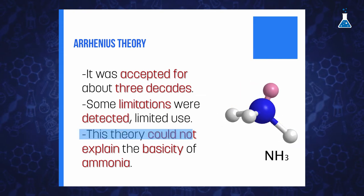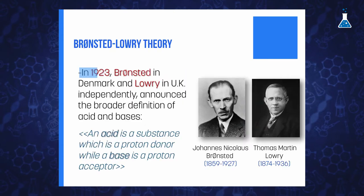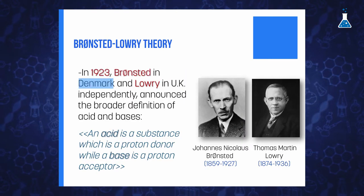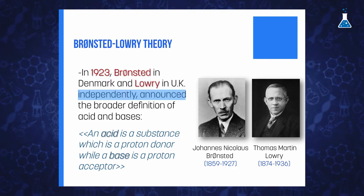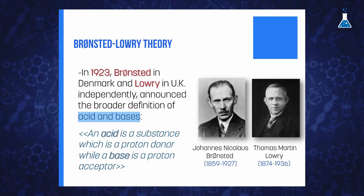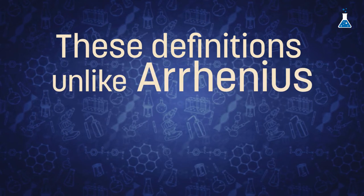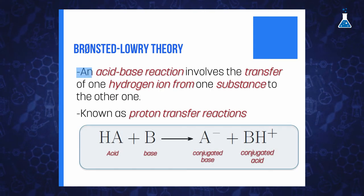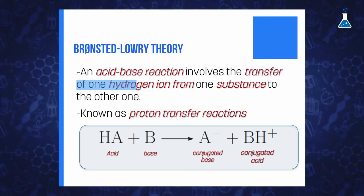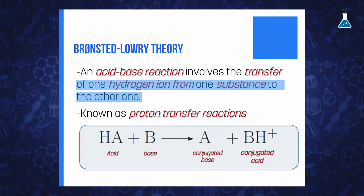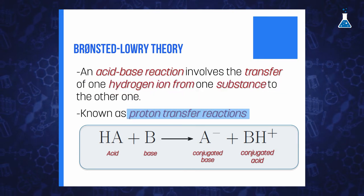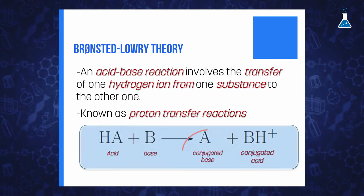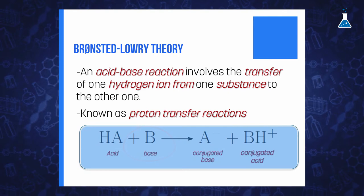For example, this theory was unable to explain the well-known basicity of ammonia. It was in 1923 when this was explained by Brønsted in Denmark and Lowry in the UK independently, who announced a broader definition of acid and base. From the point of view of this theory, an acid is a substance which is a proton donor, while a base is a proton acceptor. This definition, unlike Arrhenius, is not limited to water solutions. According to Brønsted-Lowry theory, an acid-base reaction involves the transfer of one hydrogen ion from one substance to another — viewed as a proton transfer reaction. In that reaction, the deprotonated acid becomes the conjugate base, while the protonated base becomes the conjugate acid.